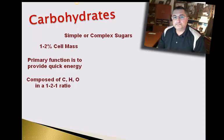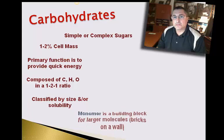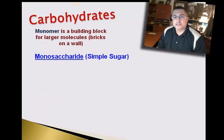Carbohydrates are classified by their size and solubility. They have a monomer, which is a building block, and in this case the building block is known as a monosaccharide or simple sugar. It will be used as the energy source of choice, but also as a building block for larger and more complex sugars.